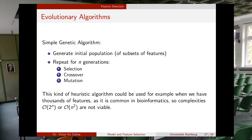Initially these solutions are randomly generated, so they are very bad. But as you apply three steps — selection, crossover, and mutation — many times (called generations), you end up optimizing or evolving the population to get good combinations of features.